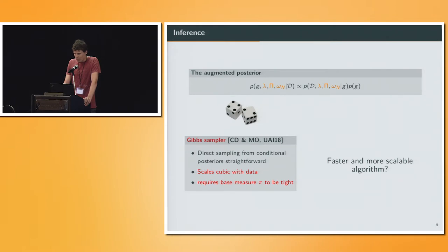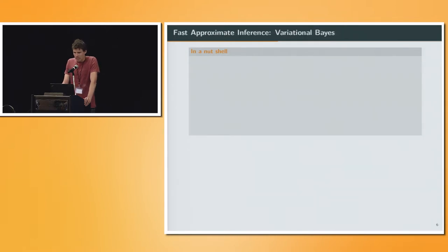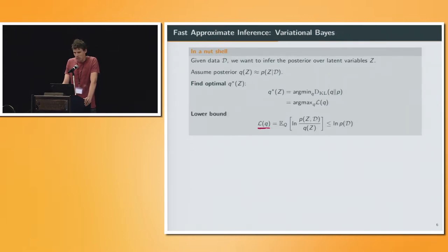Can we find a faster and more scalable algorithm? As we have seen a lot already, variational Bayes is one possibility, and we take this route. In a nutshell, given data d, we want to infer your posterior over some latent variable z, where we cannot solve the inference problem for. We assume that the posterior has some functional form where the inference problem is solvable. Then we find our optimal variational posterior q star by minimizing the Kullback-Leibler divergence between this q and the actual posterior, which is equivalent to maximizing the lower bound on the log model evidence.